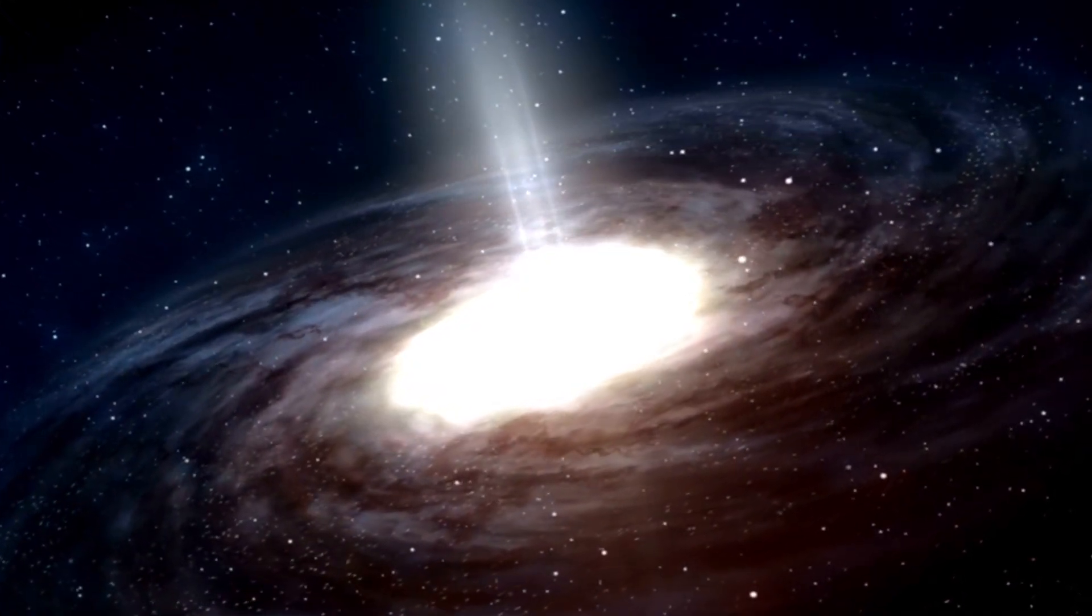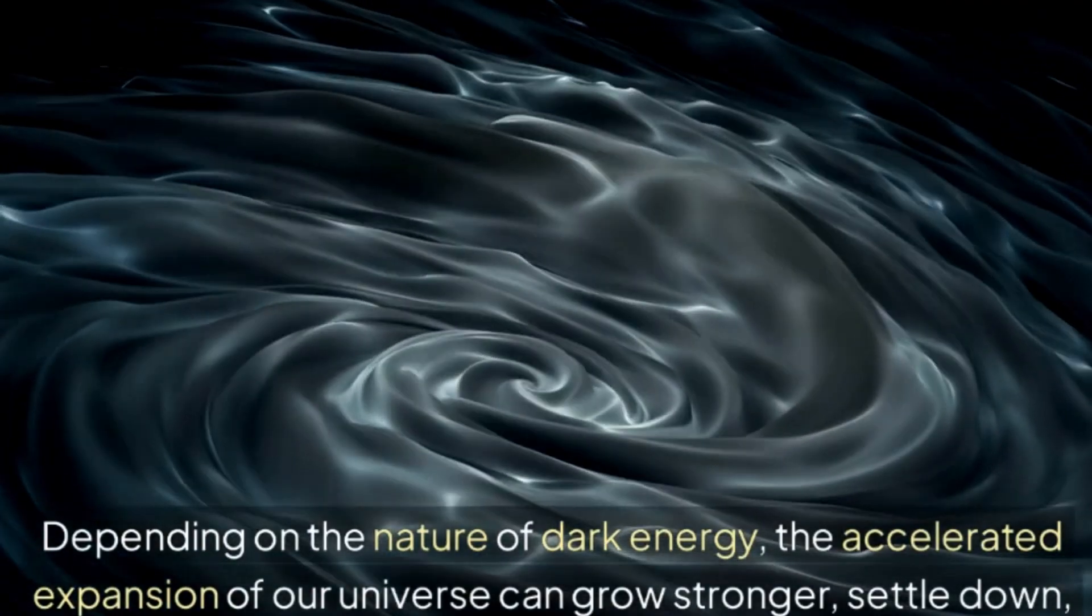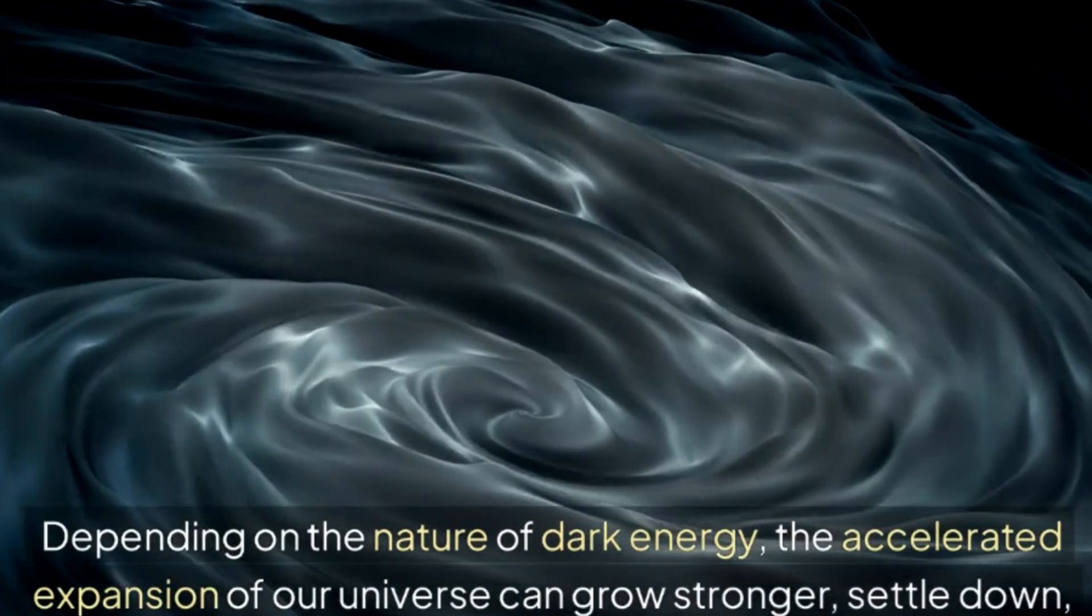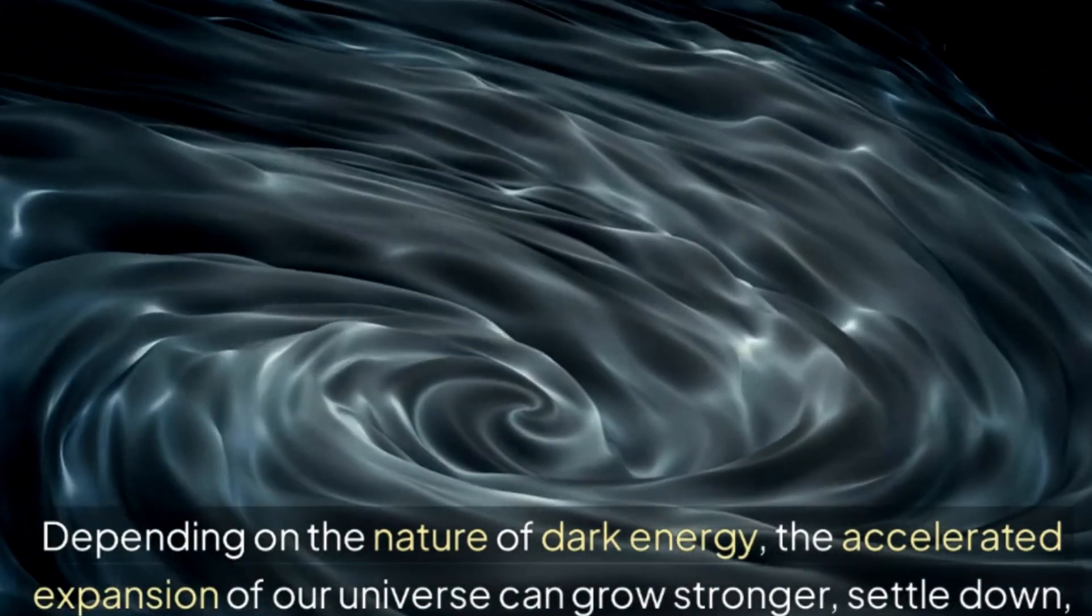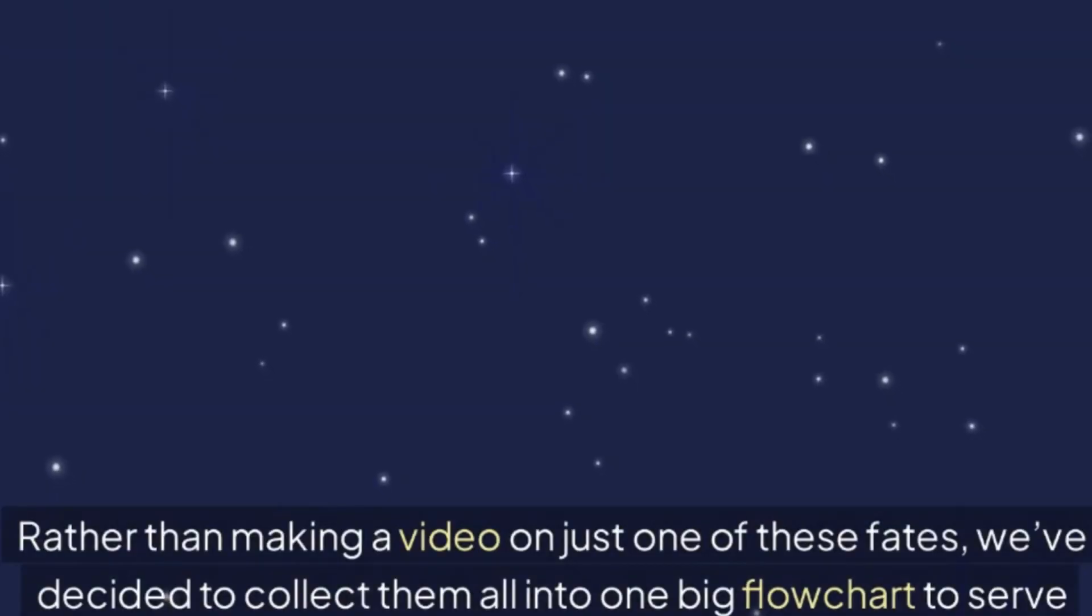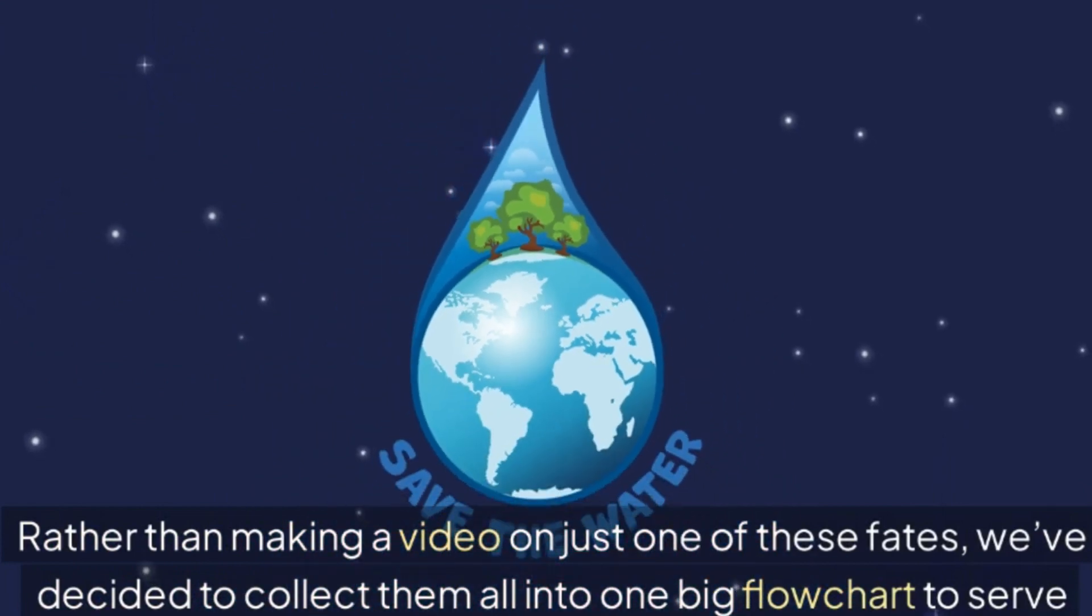Since fields are just a way to represent collections of particles, this would mean that dark energy is made of a new form of matter, new types of particles, beyond electrons or quarks or anything else we know of today. From these two categories, our flowchart is going to branch out into theories of dark energy that are wildly different from each other and predict all sorts of catastrophic futures.